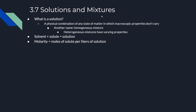Section 3.7 covers solutions and mixtures. A solution is a physical combination of matter in which macroscopic properties do not vary — also called a homogeneous mixture. Heterogeneous mixtures have varying properties. A solution consists of a solvent and a solute. Molarity, the moles of solute per liters of solution, is the unit used for solution concentration.